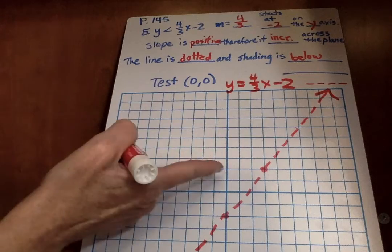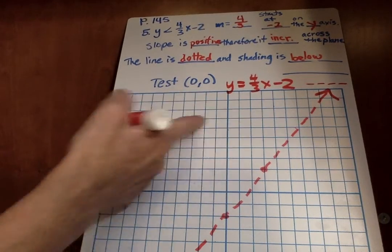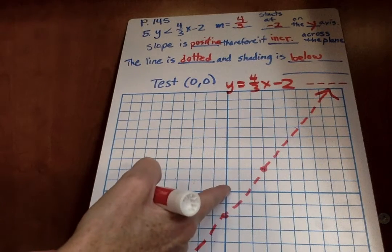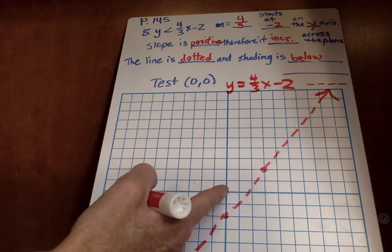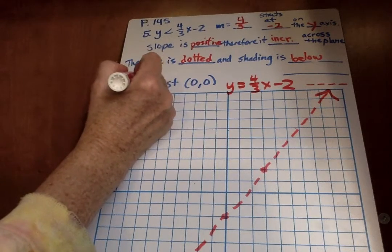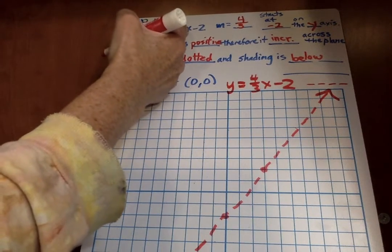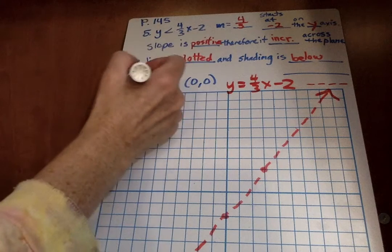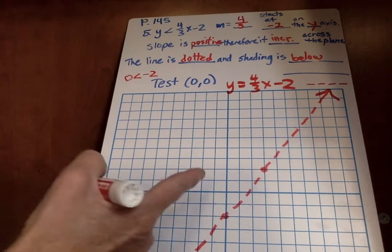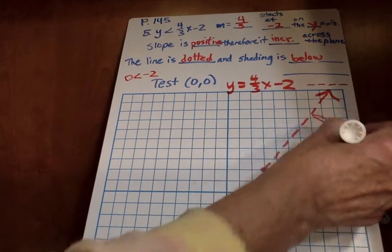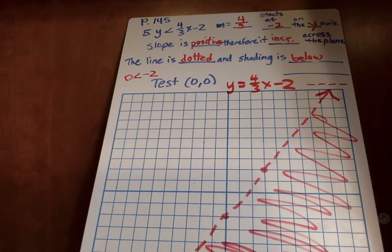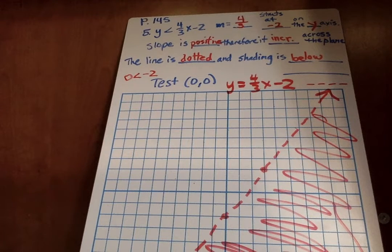Then you want to test out 0, 0. If it works, it should be above here. Since it's less than, it should make a false statement. If I put in 0, 0, let's find out. Is 0 less than 0 times 4 thirds of 0 minus 2? Is 0 less than negative 2? No. So 0, 0 does make a false statement. So the shading should go down here.